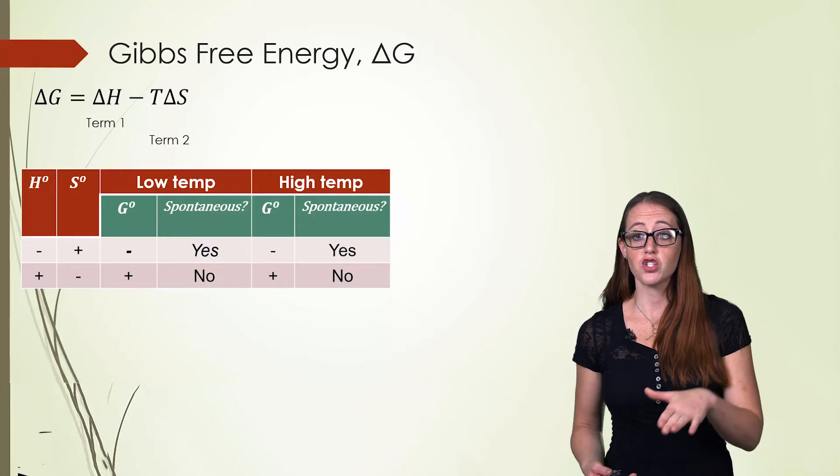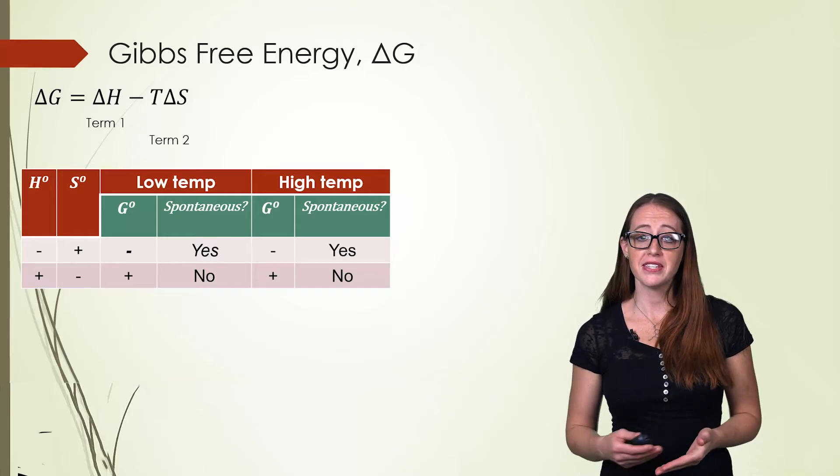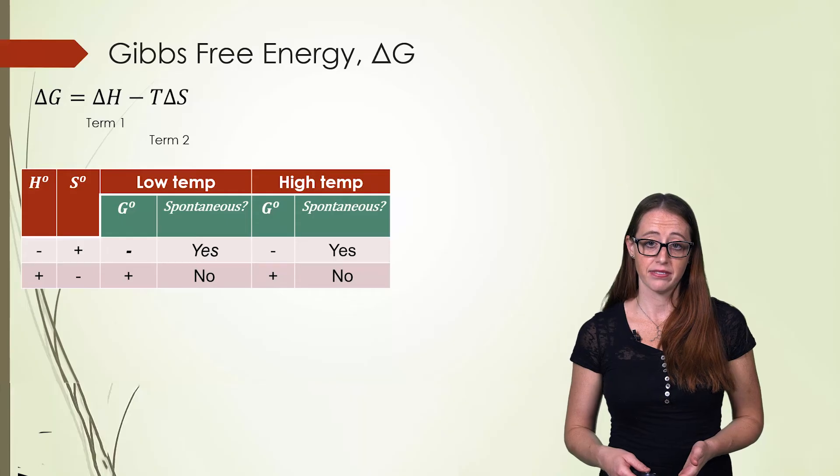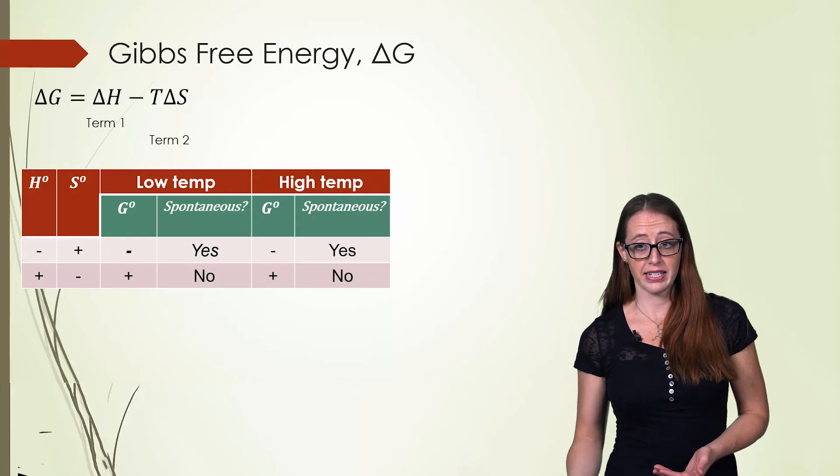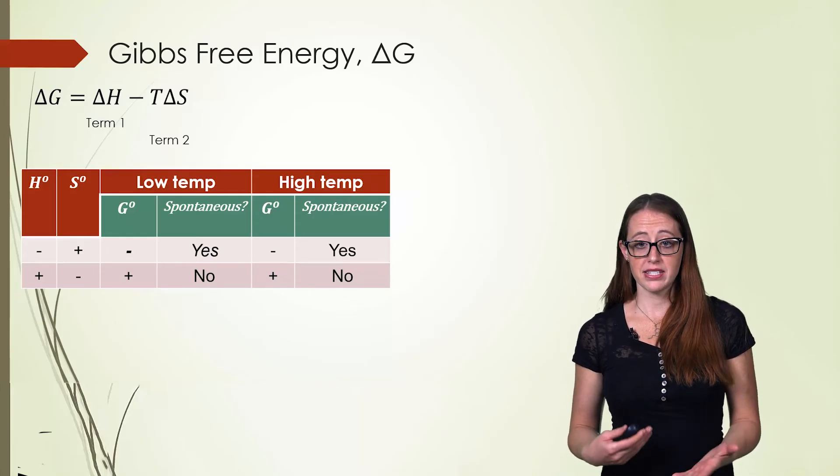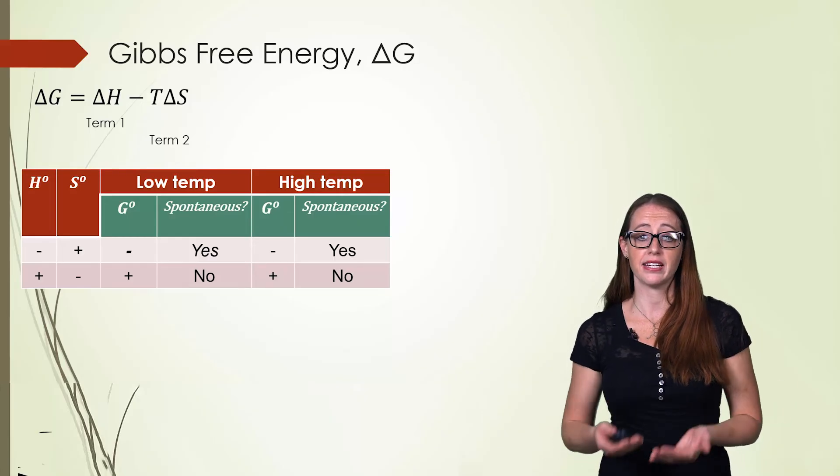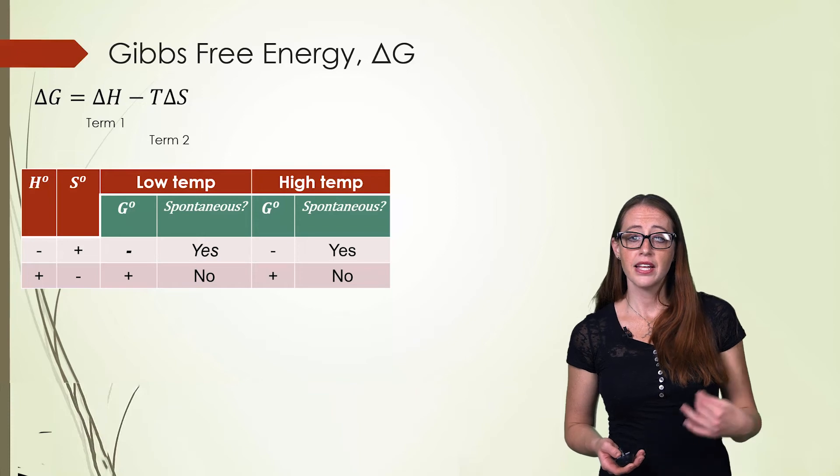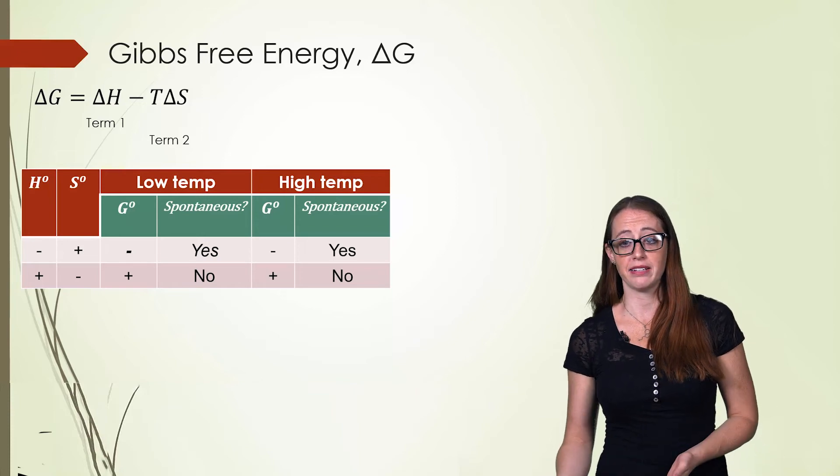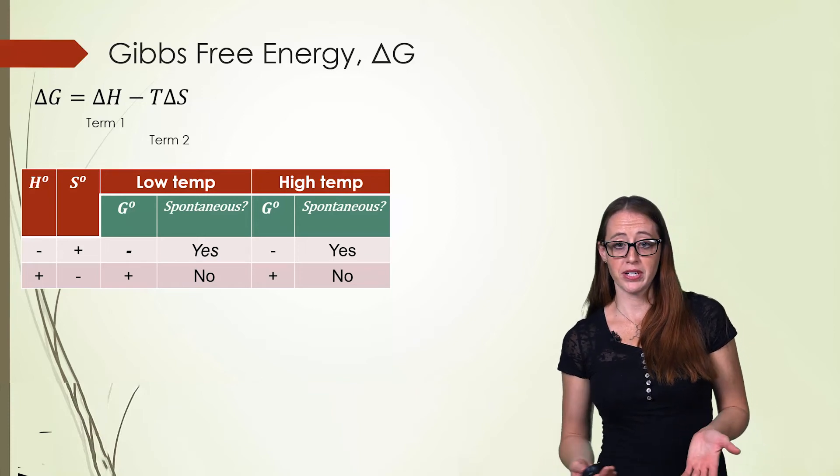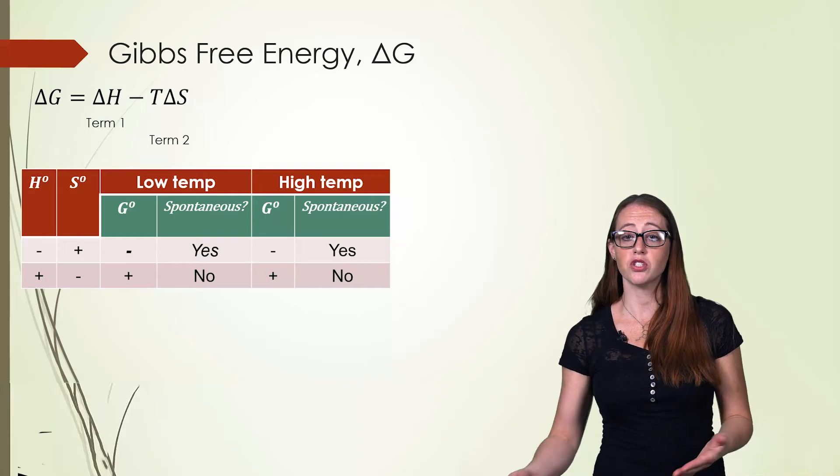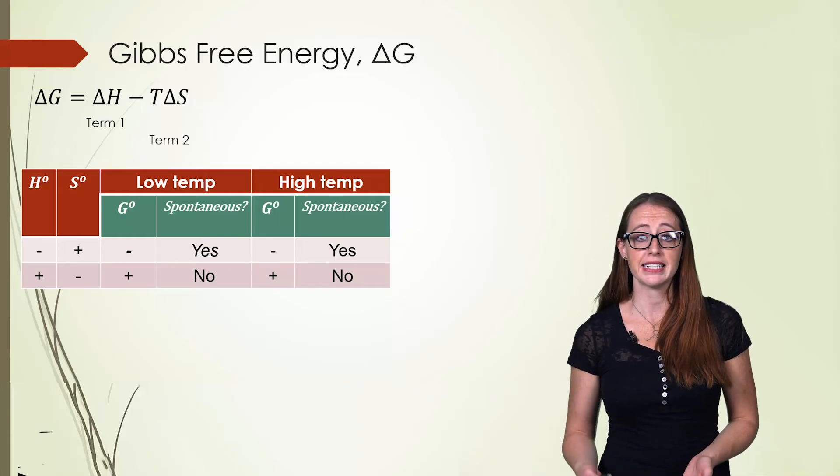Let's first look at the most straightforward cases. If the sign of ΔH is negative, the first term is negative. If the sign of ΔS is positive, then the second term is negative as well because there's a negative in the equation. This would mean that both terms are negative. If both terms are negative, then the overall ΔG must also be negative and therefore is spontaneous in all cases.